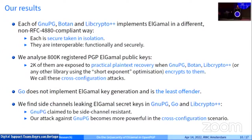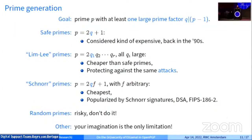We also found side-channel conditions in essentially all the libraries we looked at. The most interesting is GPG, because GPG claimed to be side-channel resistant. We showed there is still some leakage in the exponentiation routine of GPG, which you can exploit to do a plaintext or, more seriously, secret key recovery. We also found that if one library generates the key and a different library does the encryption, you can more easily implement these side-channel attacks. We collectively refer to this as cross-configuration attacks, because they come from the interplay between different libraries that have made different algorithmic choices about what it means to do ElGamal encryption.